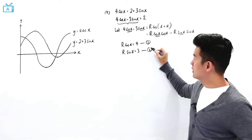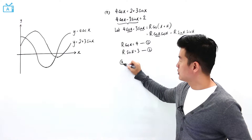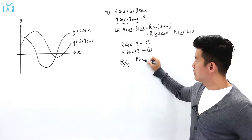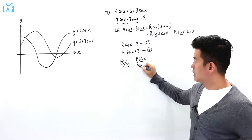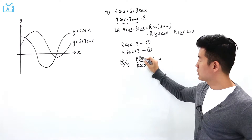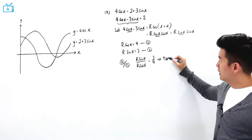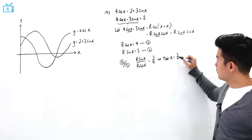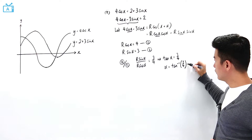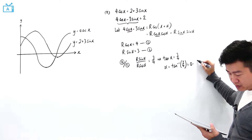So R sine α = 3 is my second equation. Let me solve for α by taking equation 2 divided by equation 1. So R sine α divided by R cosine α equals 3 over 4. The R cancels, and sine α over cosine α is tangent α, so tan α = 3/4, which means α = arctan(3/4) = 0.64350 radians.